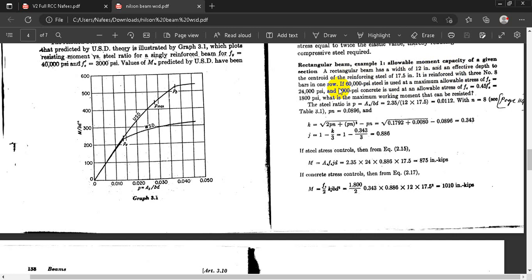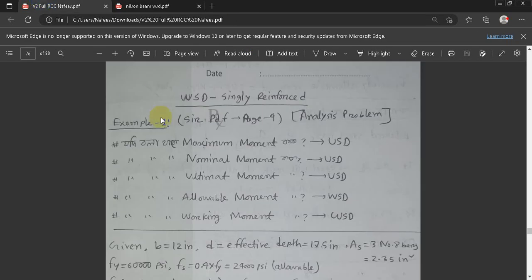It is reinforced with 3 number 8 bars in one row. If 60,000 PSI steel is used at maximum allowable stress of 24,000 PSI and 4,000 PSI concrete with allowable stress of 0.45 or 45% use, that means 800 PSI. What is the maximum working moment that can be resisted?